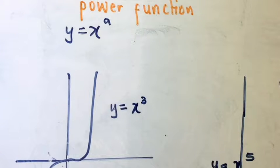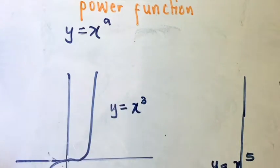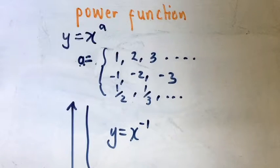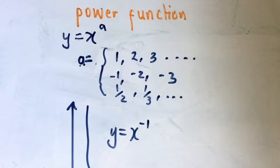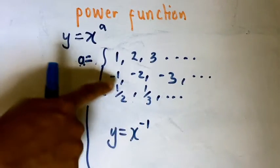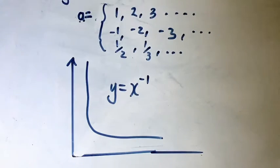Now considering negative values: a equals negative one, negative two, negative three. For y equals x to the power negative one — that is, y equals one over x — this is also a power function with a negative exponent. For example, y equals x to the power negative one.